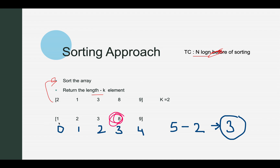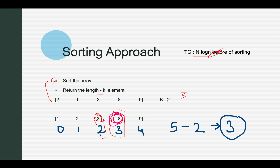After sorting, the array becomes [1, 2, 3, 8, 9]. To find the second largest element, use index length minus 2, which is 5 minus 2 = 3. The element at index 3 is 8, which is your kth largest. If k equals 3, then 5 minus 3 = 2 gives index 2, and the answer would be 3. This is a brute force approach you could present in an interview.